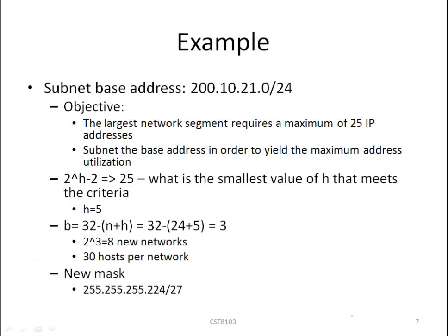Let us look at another practical case. This time we will put in practice the formulas we've seen earlier. Here we have a base address of 200.10.21.0/24. Some of the criteria: the largest network segment requires a maximum of 25 IP addresses, and the subnetting criteria is such that you must subnet the base address to yield the maximum address utilization. Hence we want to eliminate any waste of addresses.